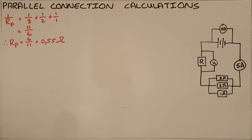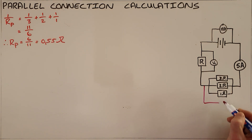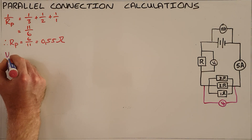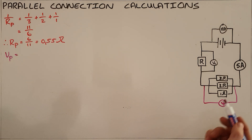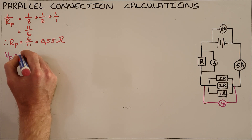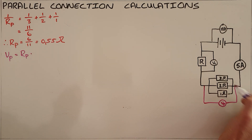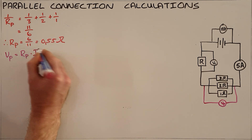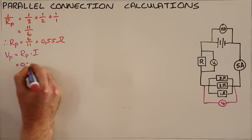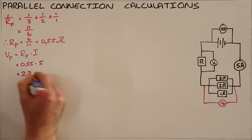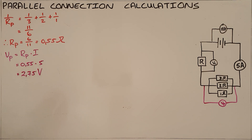What we can do next is calculate the voltage being used over this parallel set. To make it easier to visualize, we can draw in a voltmeter here called Vp. We calculate that by saying voltage is always equal to the resistance between the two points — in this case Rp — multiplied by the current passing through those points, which we've been told is 5 amps. So that's 0.55 ohms multiplied by 5 amps, giving us a voltage over the parallel connection of 2.75 volts.